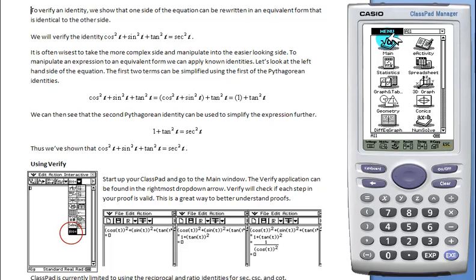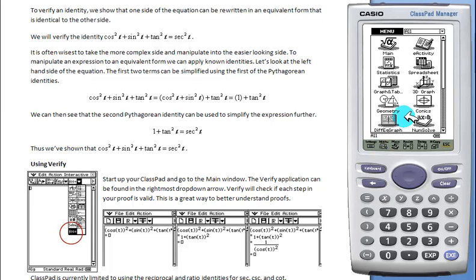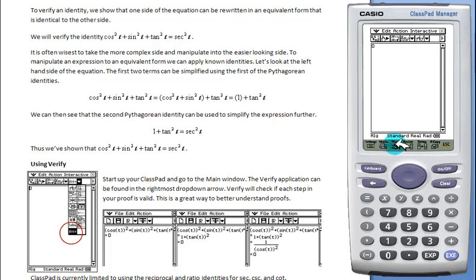Verify can be found in the main application by clicking here. Main can also be reached from anywhere else by clicking Main on the hard icon panel. Verify will be found in the last drop-down palette and the last button.